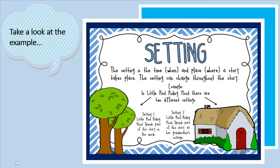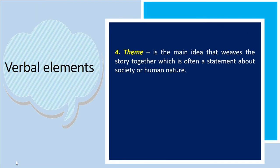Take a look at this example from Little Red Riding Hood. In the story, there are two main settings: setting one is when Little Red Riding Hood spends part of the story in the woods, early in the morning; and setting two is when she spends part of the story at her grandmother's cottage, in the evening or afternoon.